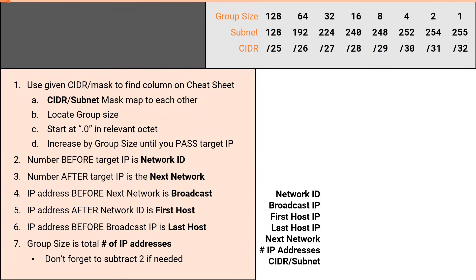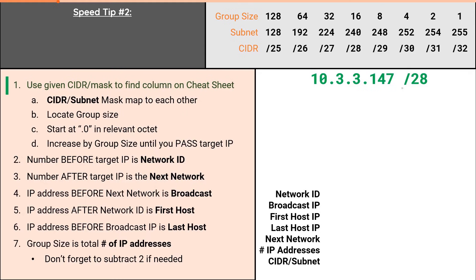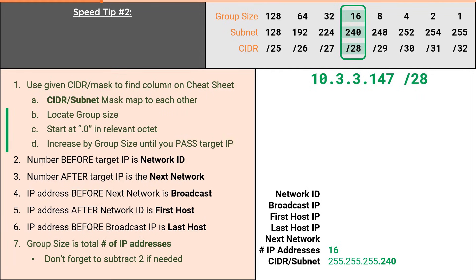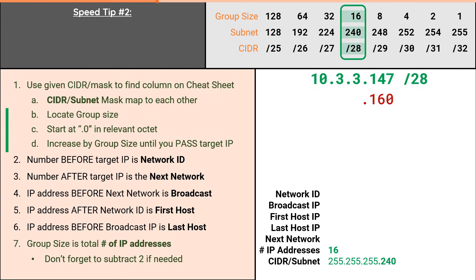To demonstrate the second speed tip, we will solve the seven attributes for 10.3.3.147/28. It'll start like any other problem. The provided CIDR of /28 puts us in this column, which gives us a subnet mask of .240 and a total number of addresses of 16. Normally, we would start at .0 and continue incrementing by 16 until we pass 147, but as you can tell, this could take a long time. We could try to use speed tip number 1, which has us multiply the group size by 10, but that puts us too far since we've already passed the target IP. Which brings us to speed tip number 2.